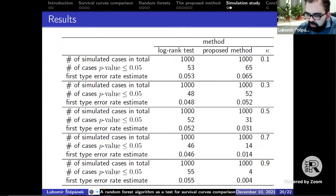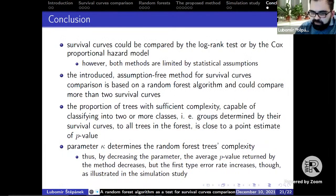So the proposed method seems to be more robust than the log-rank test for larger values based on the simulation. Just to conclude, we have seen that survival curves could be compared by the log-rank test or by the Cox proportional hazard model. However, those methods are limited by some statistical assumptions. We introduced a novel assumption-free method for survival curves comparison and it is based on a random forest algorithm.